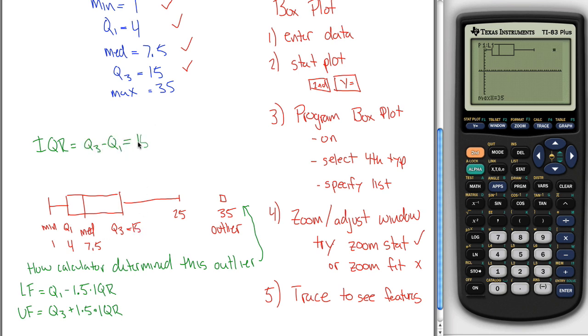So in this case, it's 15 minus 4, which is 11. So what that gives me is a way of determining my upper and lower fences, which are kind of my bounds to determine what are outliers.